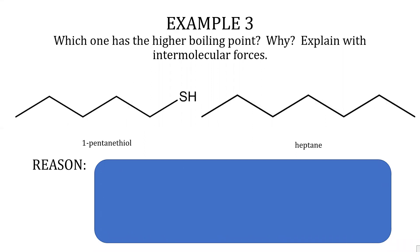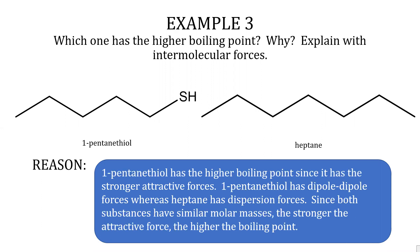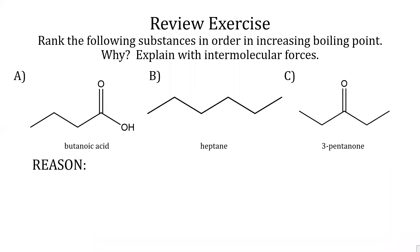Example three: which one has the higher boiling point and why? The substances are 1-pentanethiol and heptane. 1-Pentanethiol has the higher boiling point since it has the stronger attractive forces — 1-pentanethiol has dipole-dipole forces whereas heptane has only London dispersion forces. Since both substances have similar molar masses, the stronger the attractive force, the higher the boiling point.